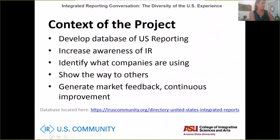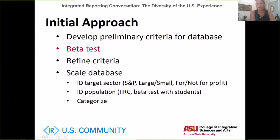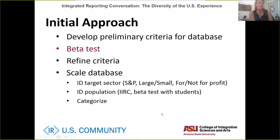Our initial approach was to come up with some criteria — what should be in the database and what markers are we looking for. We used my class, which ran last April and May, to beta test the database and populate it by doing content analysis of some annual reports. Going forward, we'll be looking to refine the criteria, checking if anything is missing or too much, and eventually scaling the database to target different sectors — large, small, family-owned, public agencies, and nonprofit organizations.